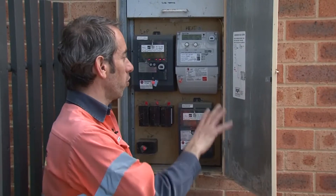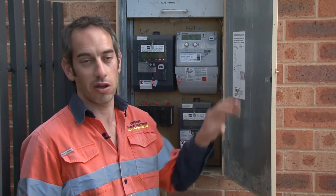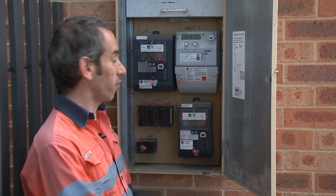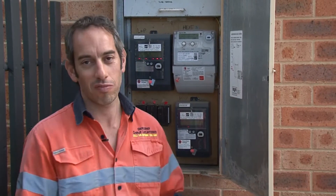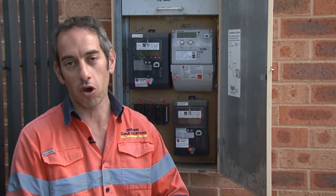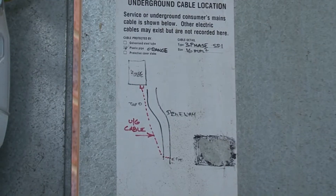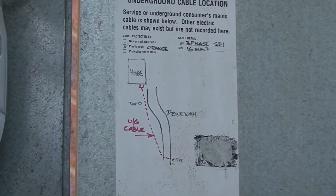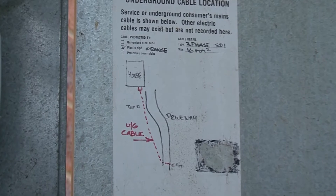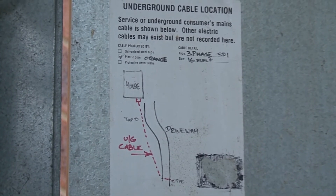Most houses at the switchboard will have an underground cable location plan of the power, from where it goes from the switchboard to the street. Now they're not accurate, but it's a guide — it still gives you a guide, so you know roughly where it should be. And for me right now, it's helped me because it says there's a pit down at the corner of the property. So that's where I can hook onto the power.